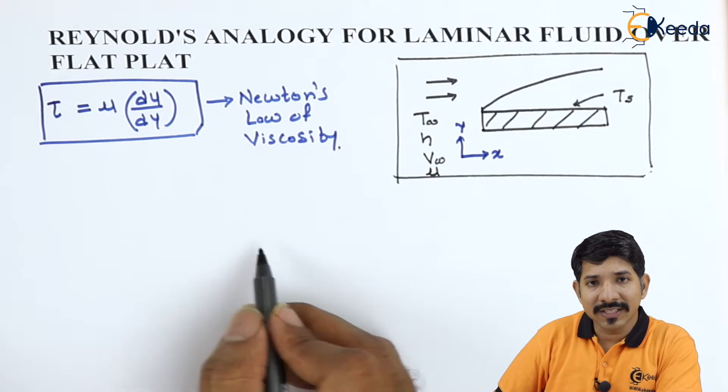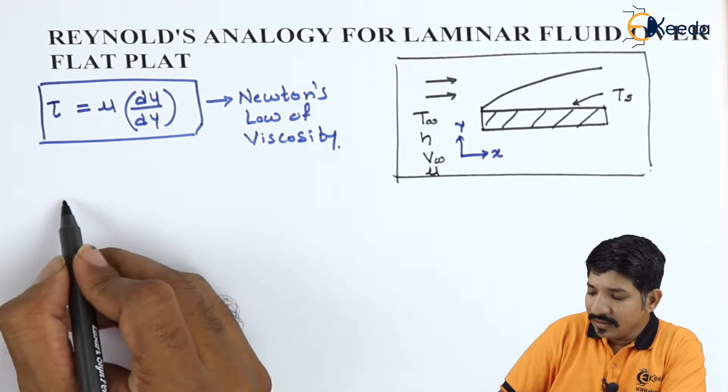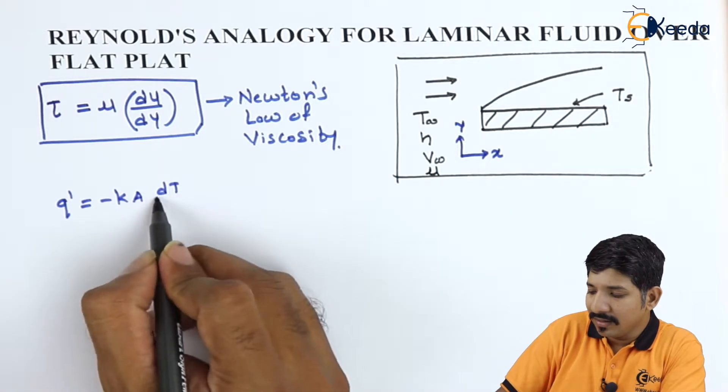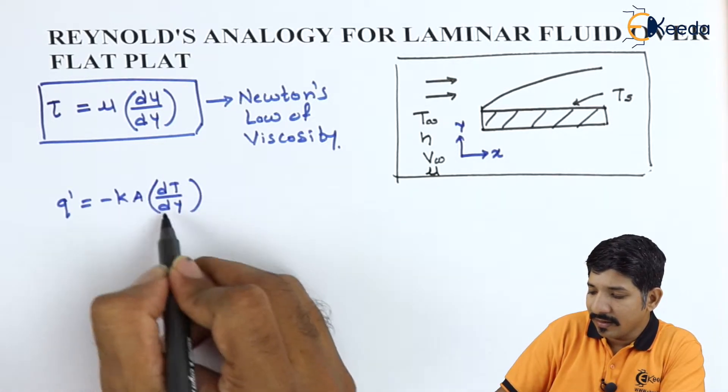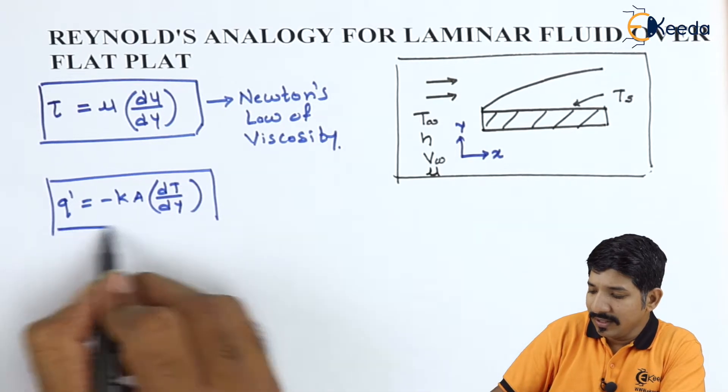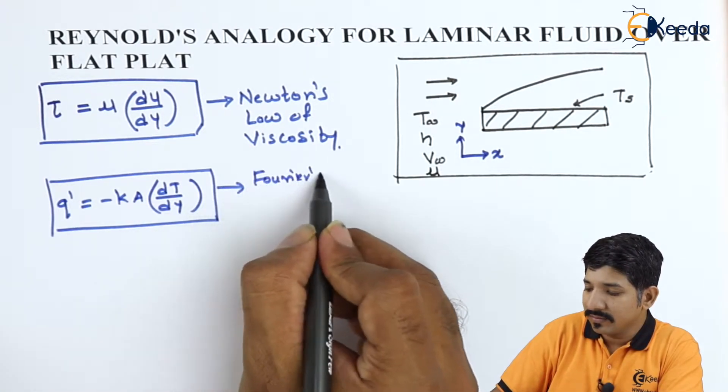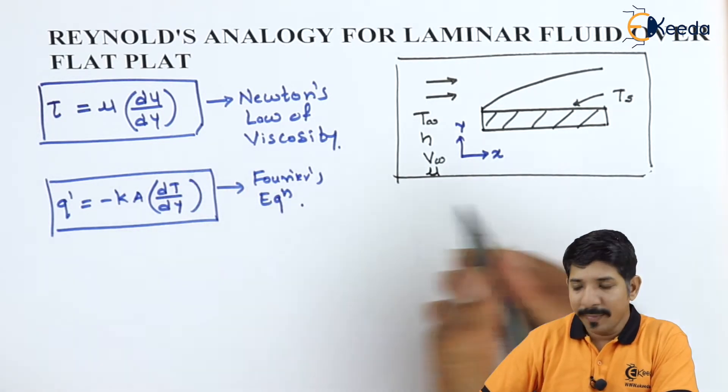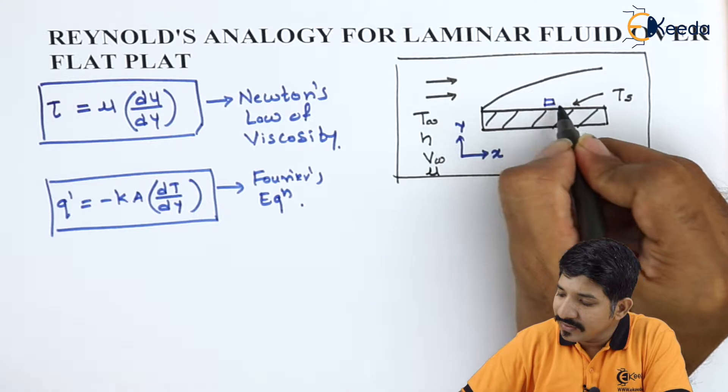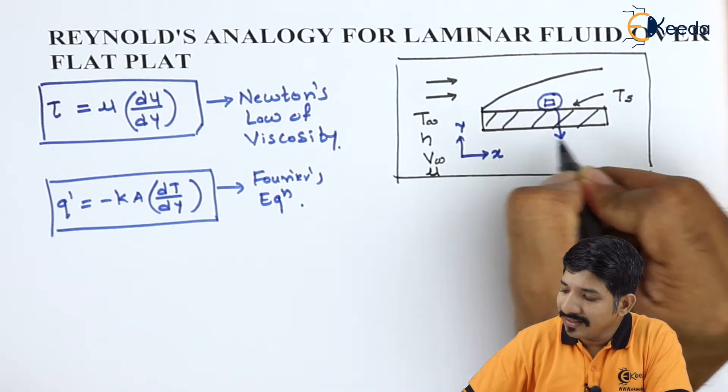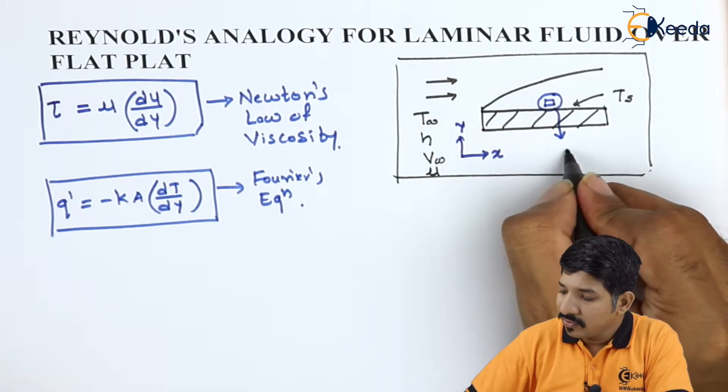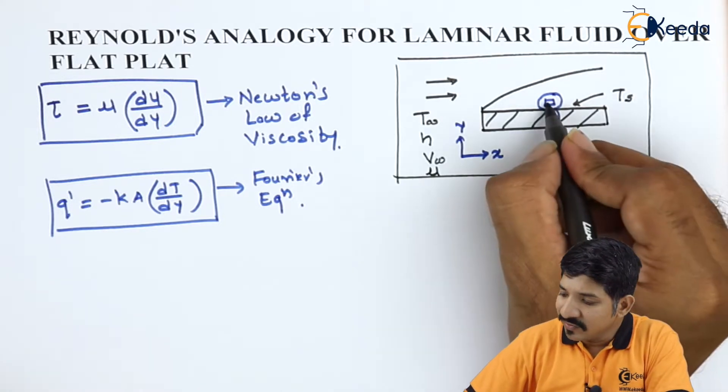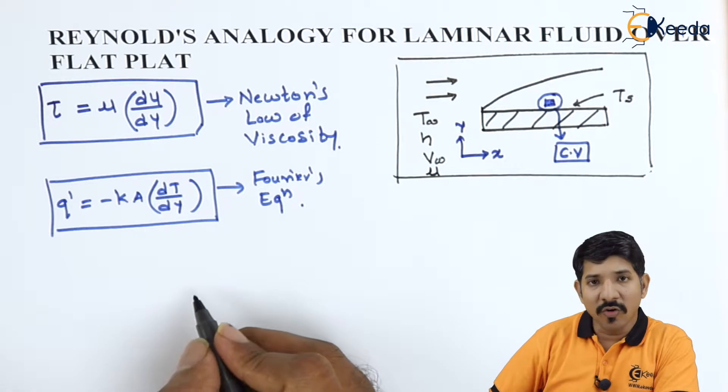Similarly, the other equation that we are going to use is q' is given as minus ka dT by dY. So this is nothing but Fourier's equation. Now these two have been applied to a small element which is kept inside a boundary layer. So this is the small control volume on which we are going to apply these equations.